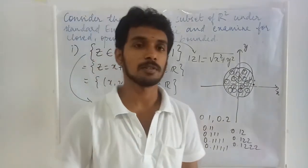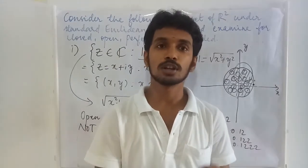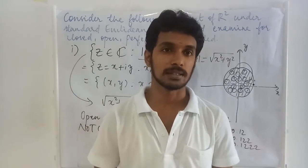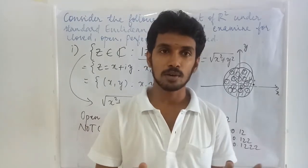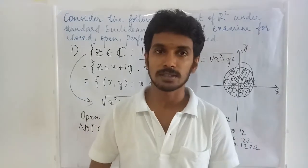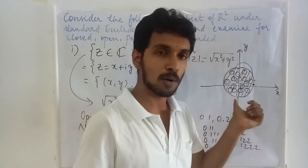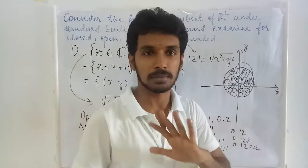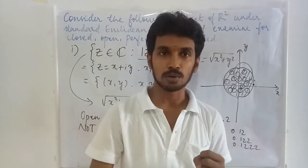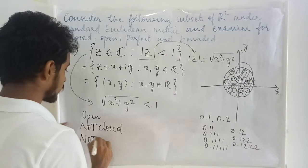A perfect set is a set which is both closed and has all points of the set as limit points of the set. In order to say it is closed, the limit points of that set must be members of the set. Here, the points on the boundary are limit points but they are not members of the set. Therefore it is not closed. When a set is not closed, it cannot be perfect as well. So this set is not perfect.